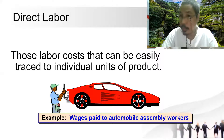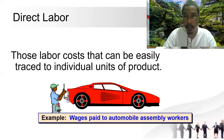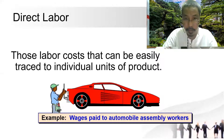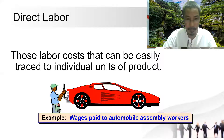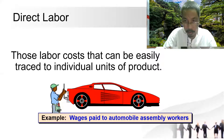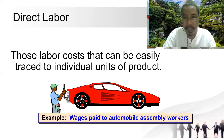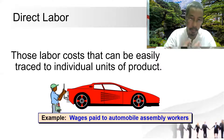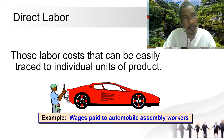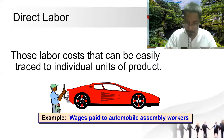Office workers are also important but they cannot be traced to individual units or product, so they are not direct labor. For example, automobile assembly workers are direct labor. Managerial staff that you also pay are not direct labor — they are overhead.